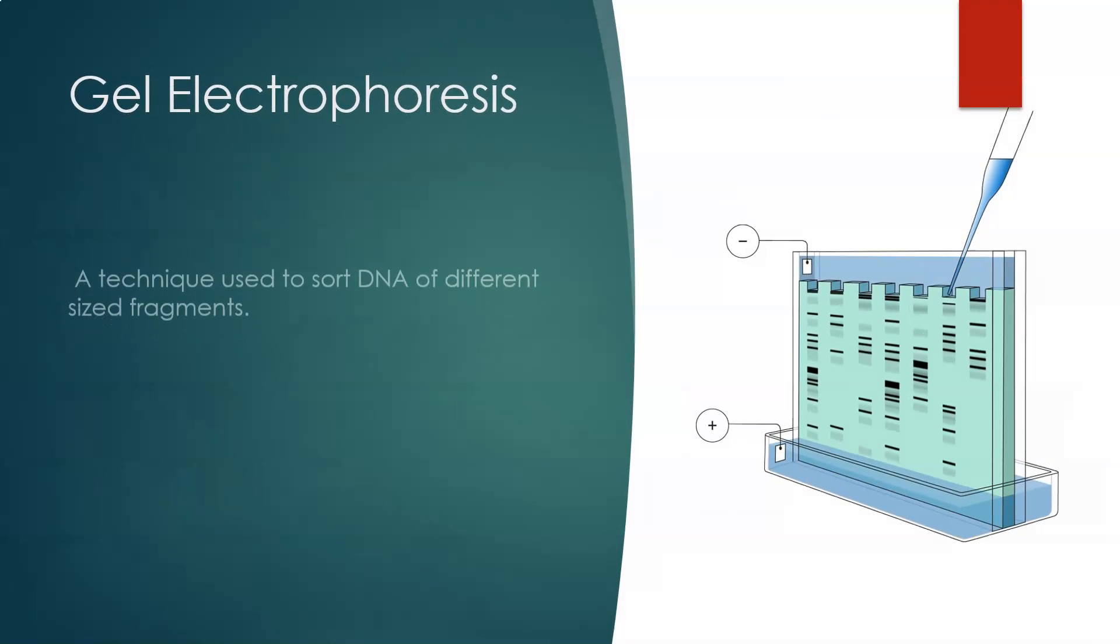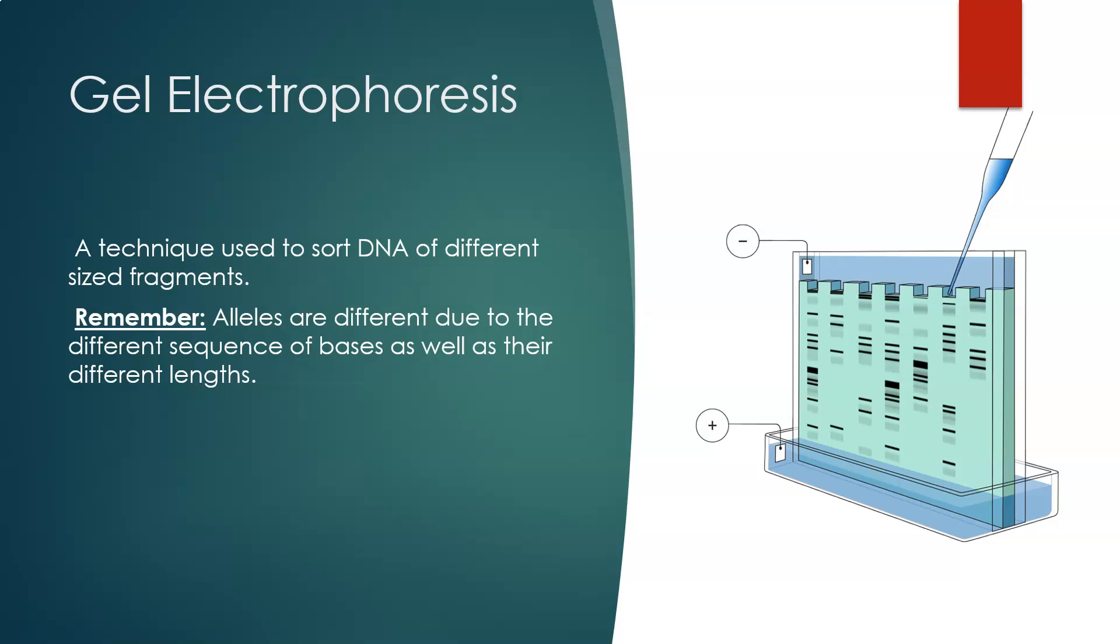How do we test the karyotype? We use this process called gel electrophoresis. It's a technique that's used to sort DNA of different sized fragments. You need to remember that alleles are different due to the different sequence of bases, as well as their different lengths.